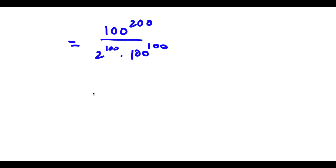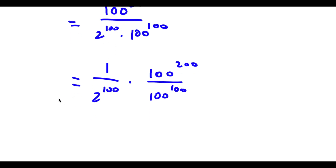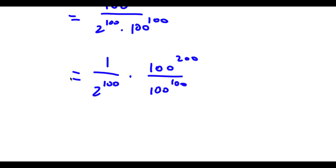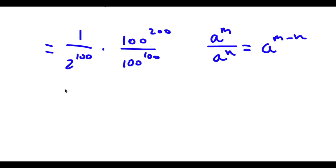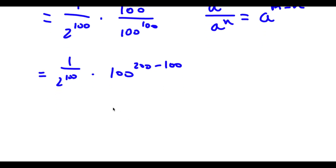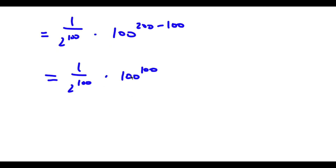Now this is the same thing as 1 over 2 to the power of 100 times 100 to the power of 200 over 100 to the power of 100, because 2 to the power of 100 is in our denominator and anything in the denominator is the same thing as 1 over that number. Now if I have something in the form a to the power of m over a to the power of n, this is equal to a to the power of m minus n. So 100 to the power of 200 over 100 to the power of 100 equals 100 to the power of 200 minus 100. 200 minus 100 is 100, so I have 1 over 2 to the power of 100 times 100 to the power of 100. We can go ahead and multiply these two again, so now I have 100 to the power of 100 over 2 to the power of 100.